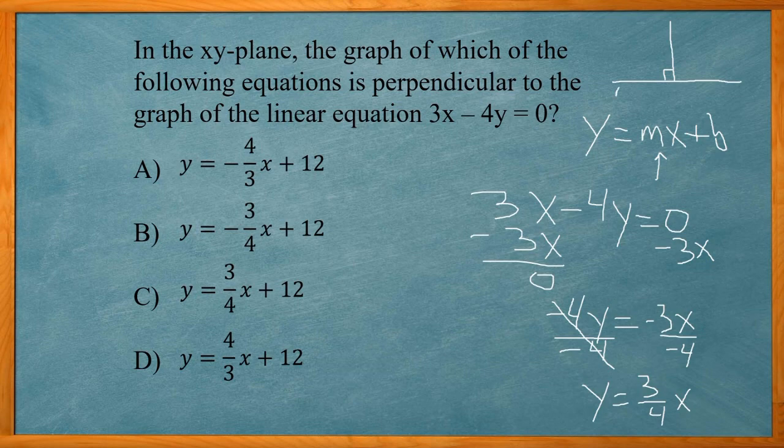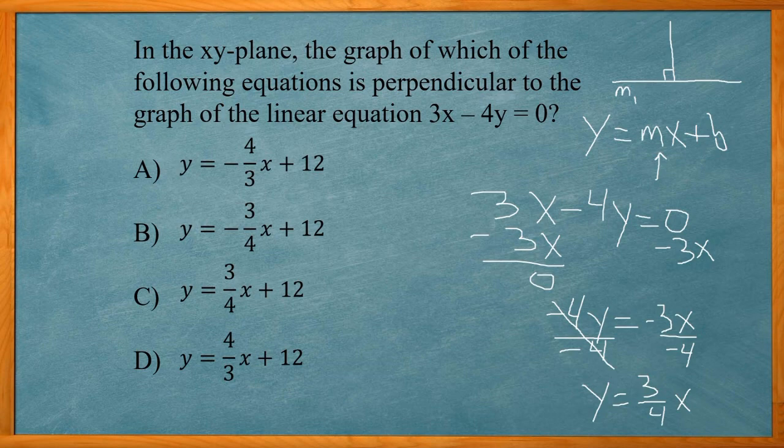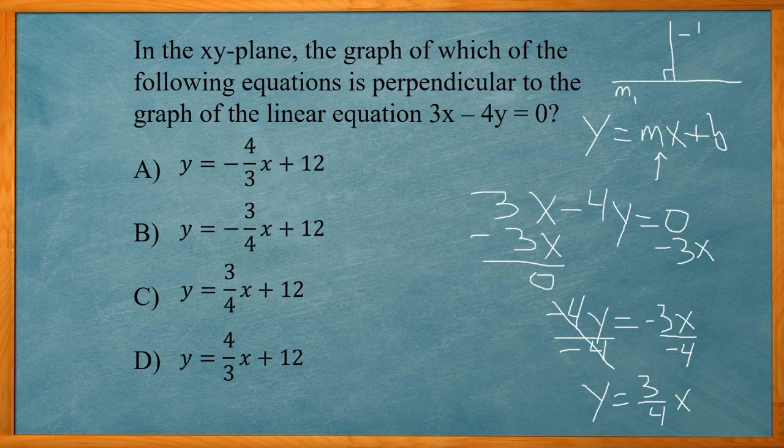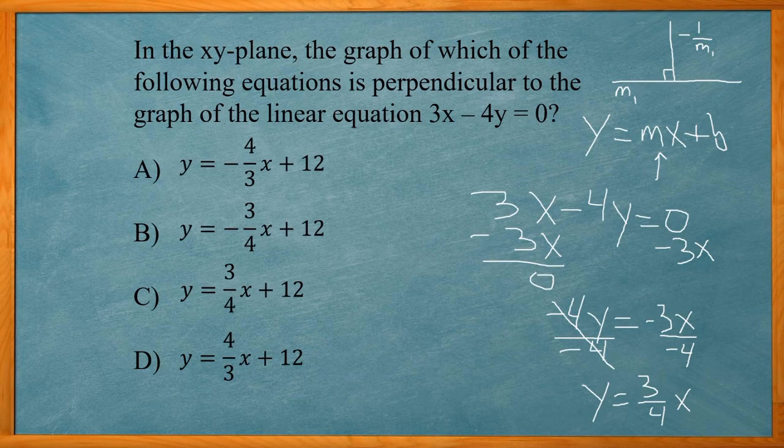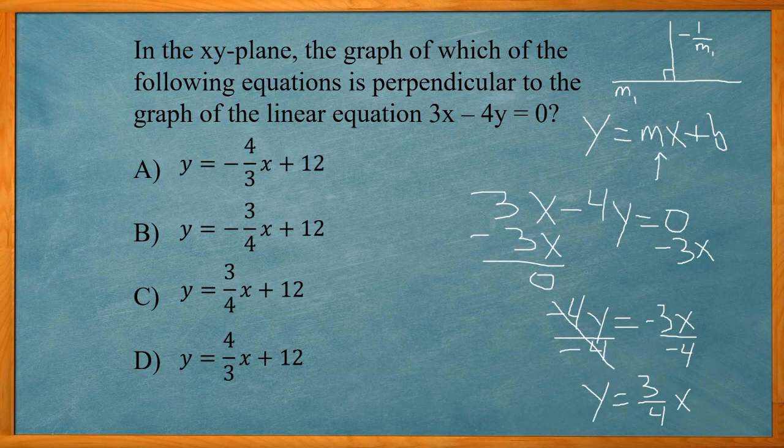The first line will have a slope, I'll just call it M1. The other line will have, it's going to be a negative reciprocal of M1. So what's the negative reciprocal? Basically flip it over and change the sign. So if one slope was 2 thirds, the negative reciprocal would be negative 3 halves.